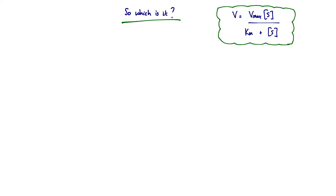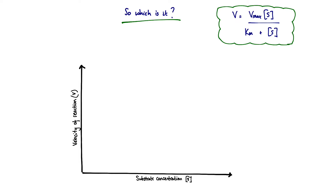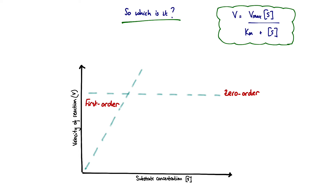If we plot the graph of velocity of reaction V against substrate concentration, we've already seen that at very high substrate concentrations — or when the Michaelis constant is low, meaning an inefficient enzyme system — there is a tendency towards zero order kinetics: no change in rate with change in substrate concentration. At very low substrate concentrations, or with very high Km meaning efficient enzyme systems, we see a tendency towards first order kinetics. So for any given system, both scenarios are possible depending on the Michaelis constant and the amount of substrate the system is exposed to.